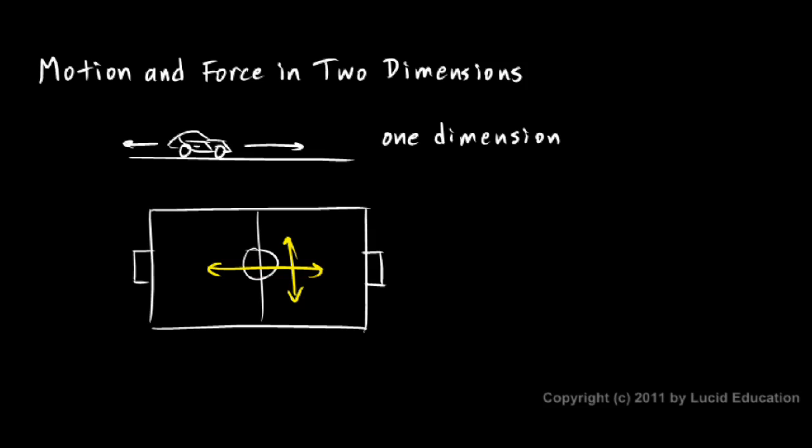Some combination of forward-backward and left-right motion could take you literally anywhere on the field. So your motion is not confined to one dimension. You can move freely in two dimensions in the plane of the field. Obviously there are some boundaries. You're not supposed to go out of bounds, and you're not going to move in three dimensions or start floating up above the field.